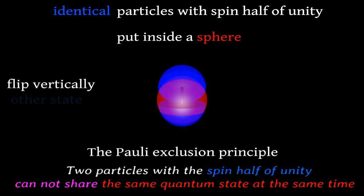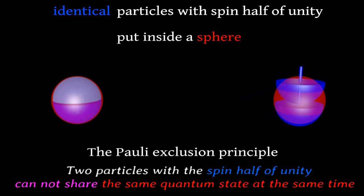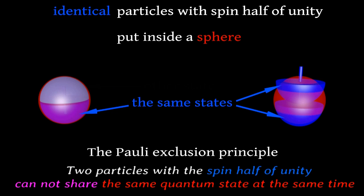However, we can do this if we flip vertically one of the half spheres. In this case, our states will not have the same internal properties or quantum numbers. They will differ in the direction of the spin, or more accurately, the projection of the spin.